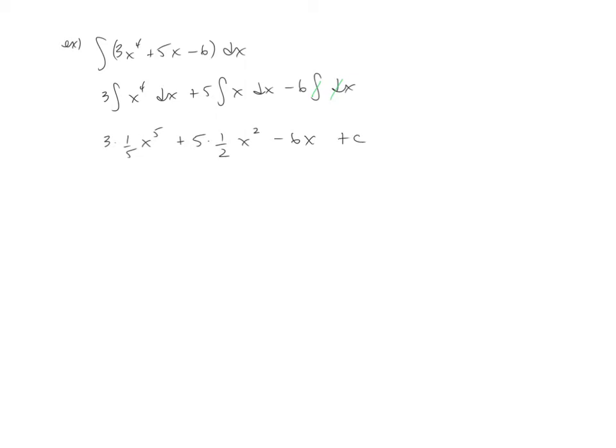Let's also not forget to put this plus c there at the end. We'll go ahead and clean it up briefly. This is 3/5ths x to the 5th plus 5/2 x squared minus 6x plus c. So there is our final answer now for the integral of the given function.